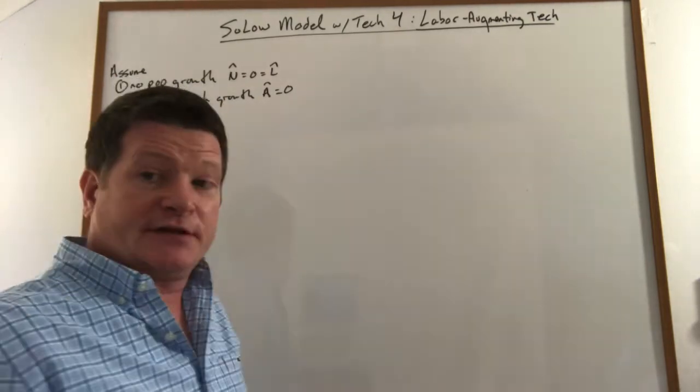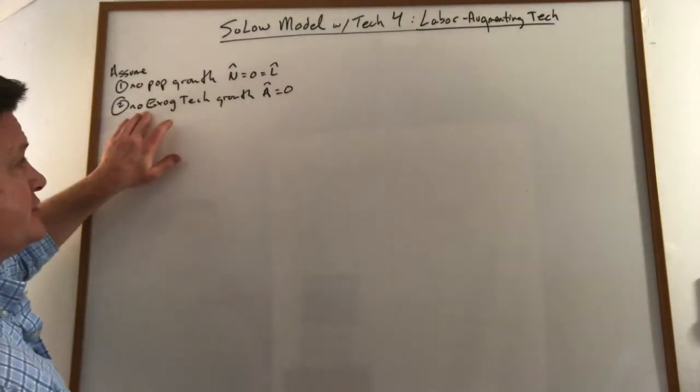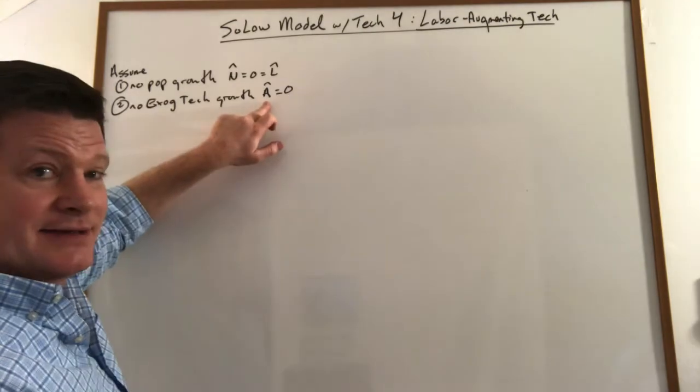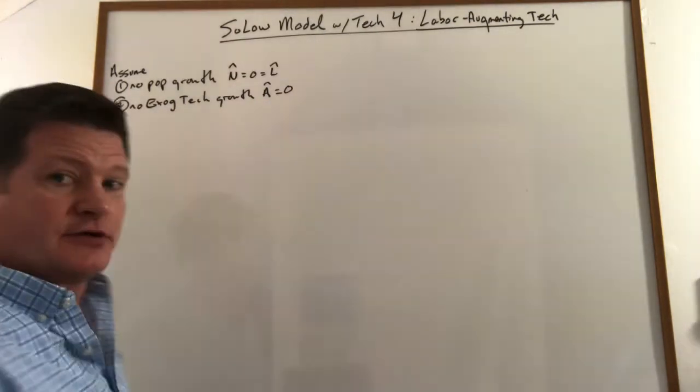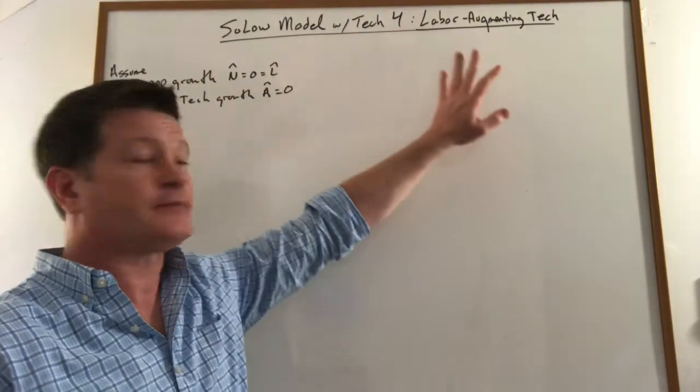The first was an exogenous growth in technology. In this case, we're going to shut that down. Let's assume there's no technological growth in A itself. Let's also assume there's no population growth. This way we're going to exclusively focus on labor technology growth.